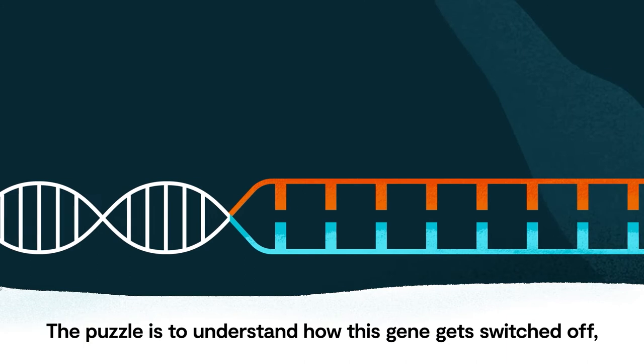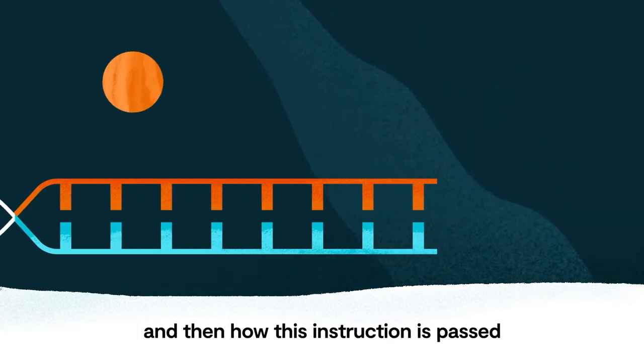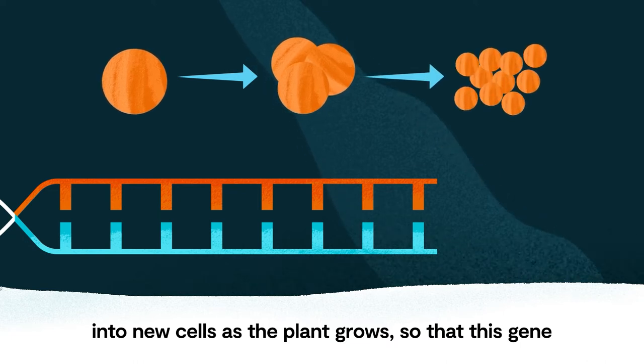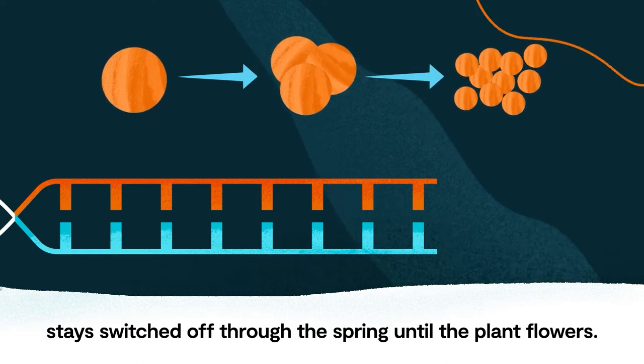The puzzle is to understand how this gene gets switched off and then how this instruction is passed into new cells as the plant grows, so that this gene stays switched off through the spring until the plant flowers.